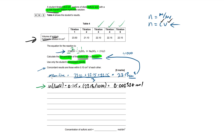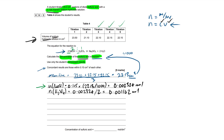So moles of sulfuric acid = 0.002324 ÷ 2, which gives us 0.001162 mol. Step one was to work out the moles of the substance whose variables we were given — sodium hydroxide. Then we used the mole ratio to determine the moles of the substance we're actually looking for — sulfuric acid.